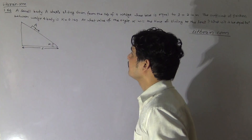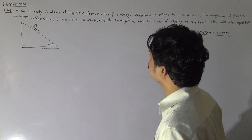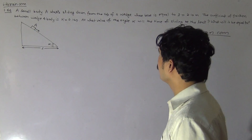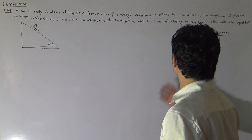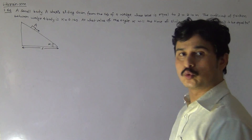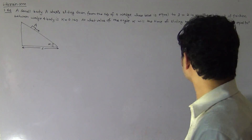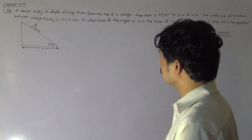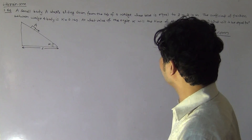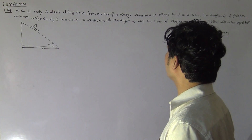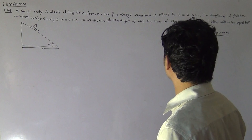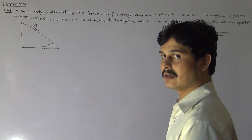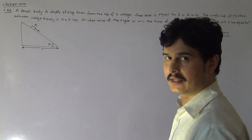Hello students. This is problem 1.66. A small body A starts sliding down from the top of a wedge whose base is equal to 2.1 meters. The coefficient of friction between the wedge and body is 0.14. At what value of angle alpha will the time of sliding be least, and what is that time?